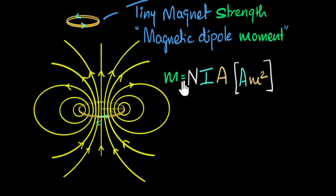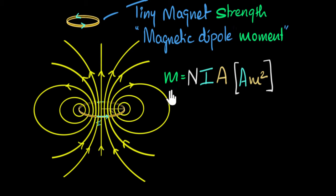Should dipole moment be a scalar or a vector quantity? Well, magnetic fields depend upon the orientation of a magnet, and similarly it depends upon the orientation and direction of the current. So it makes sense to think of dipole moment as a vector quantity. How do we define its direction? Over here, the magnetic field is produced upwards — at least on the axis — so we say the direction of the dipole moment is upwards.